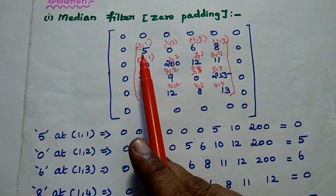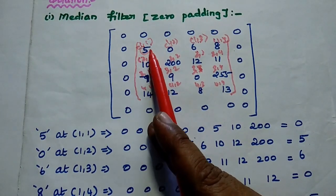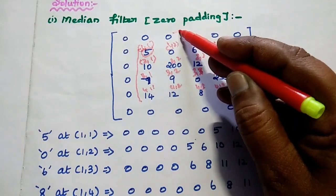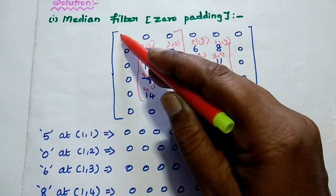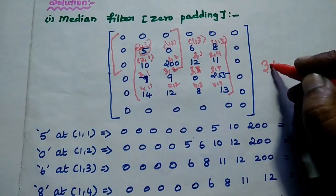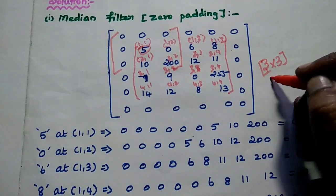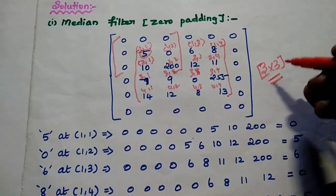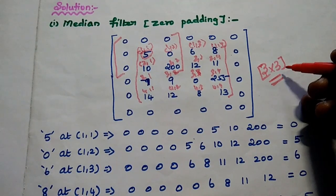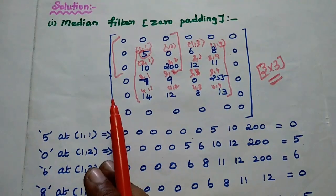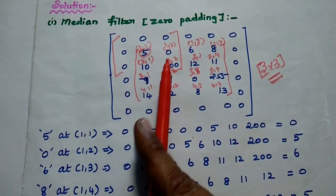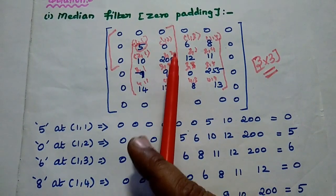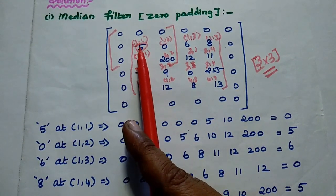First we are going to take this first pixel value. So 5 at position 1,1. For this one we can take only this 3x3 segment. Here we can take the 3x3 median filter concept. If the filter size is not specified in the question we can assume the size is 3x3. Within this segment we are going to apply the concept. Median filter means in the given segment we are going to find out the median value.